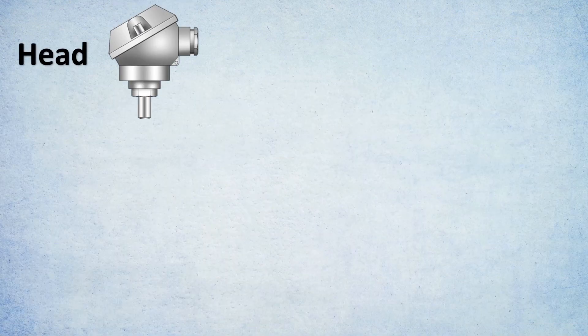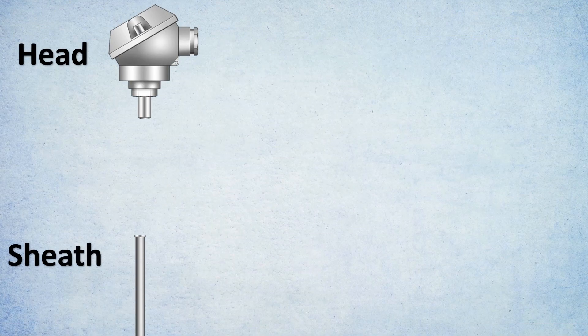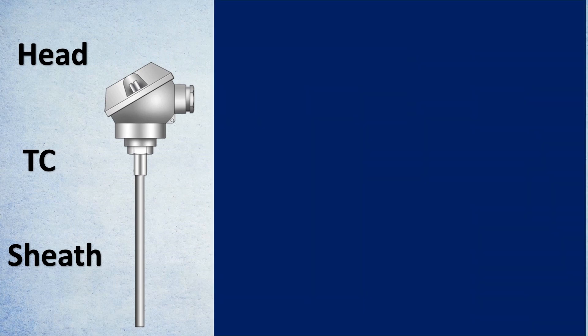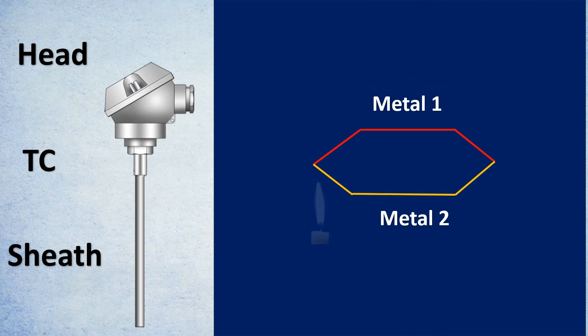But before that, first let us learn the basic understanding of it. So here's the head, sheath and a thermocouple that is usually the assembly for a thermocouple to be used. Now in order to understand the working, it has two metals which are welded together and on the junction which has one is the hot junction.